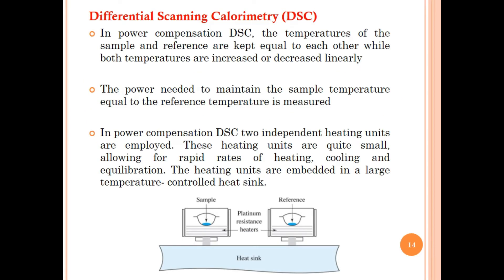In power compensated DSC, the temperatures of the sample and reference are kept equal to each other while both temperatures are increased or decreased linearly. The power needed to maintain the sample temperature equal to the reference temperature is measured. Two independent heating units are employed; these heating units are quite small, allowing for rapid rates of heating, cooling, and equilibration. The heating units are embedded in a large temperature-control heat sink.